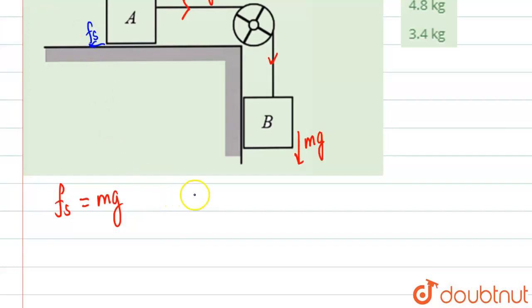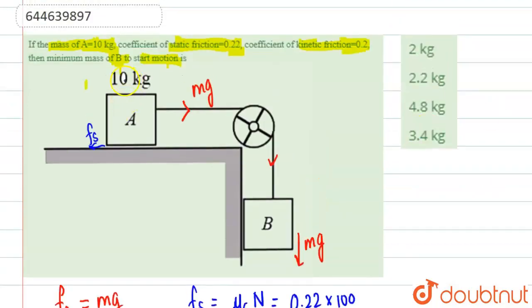So basically, fs will be equal to mu_s, which is the static coefficient of friction, times n. So mu_s will be 0.22, given in the question, and n is basically 100 newtons. Why 100 newtons? If we draw the FBD of this block, we'll get a force mg downwards which will be equal to 100 newtons, and there will be a normal force upwards.